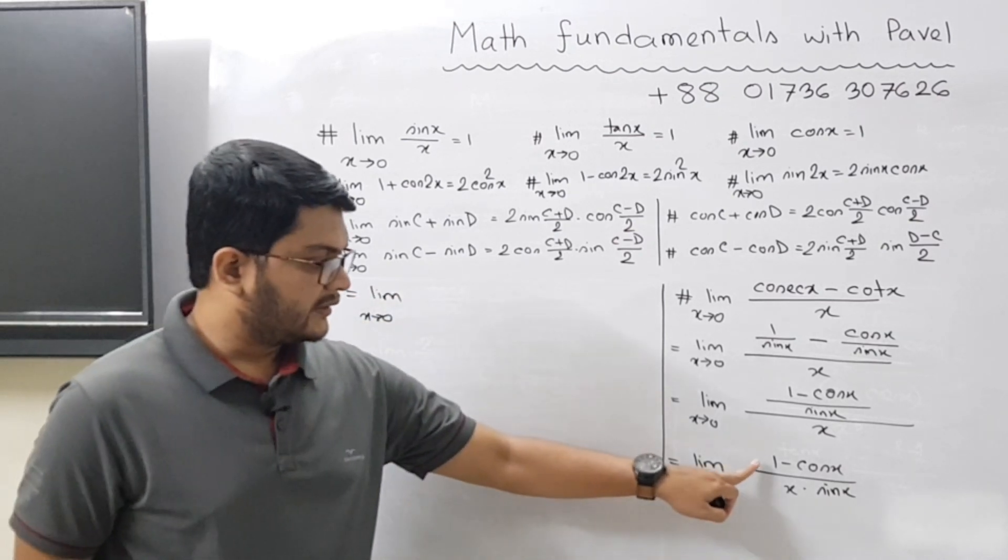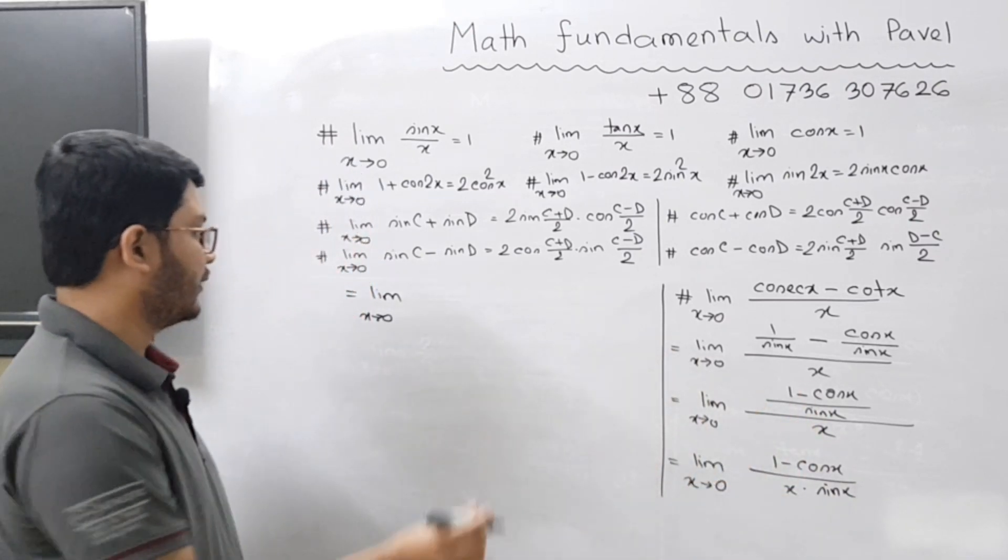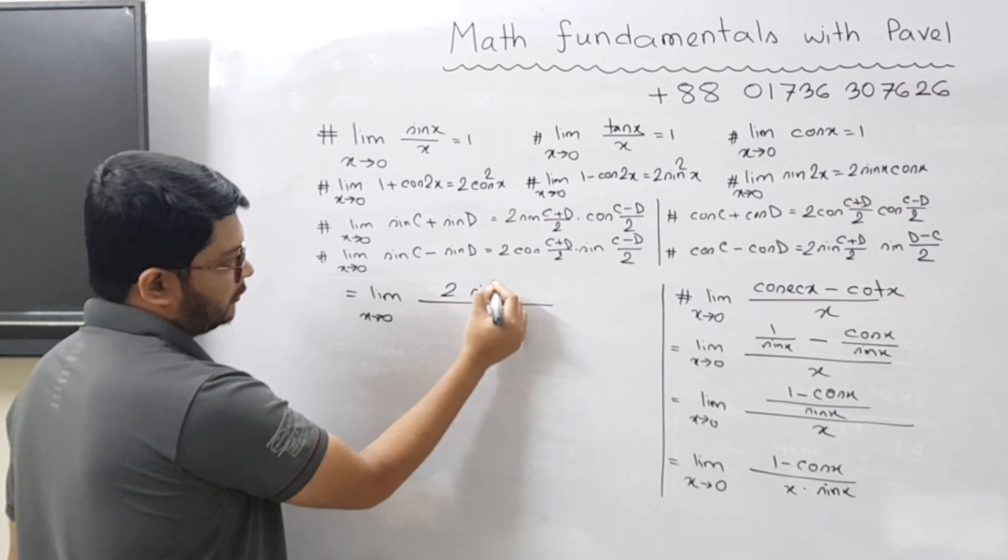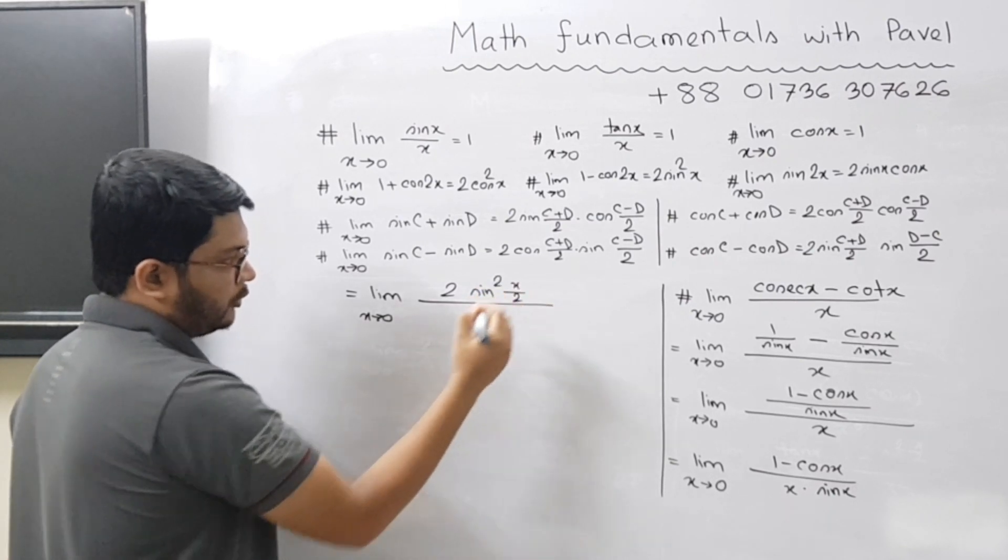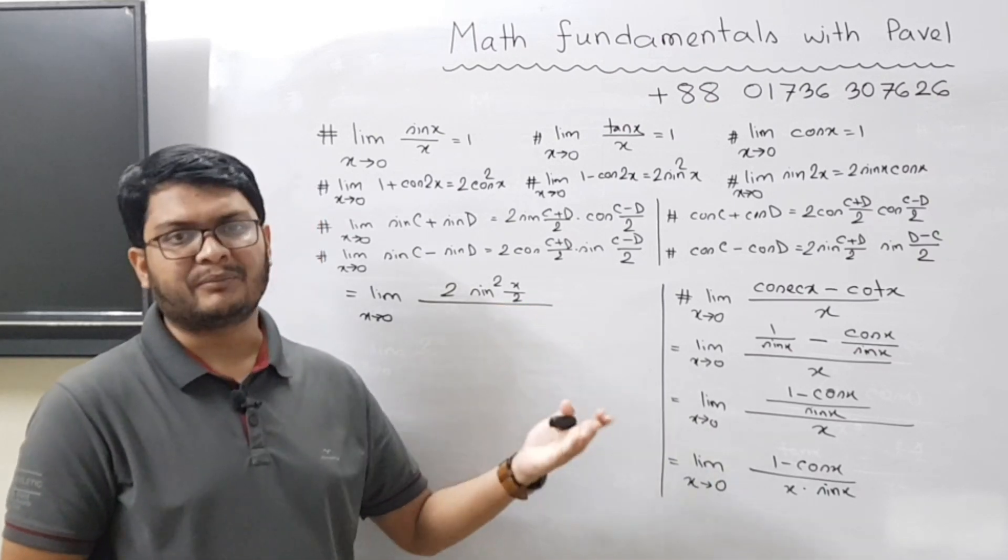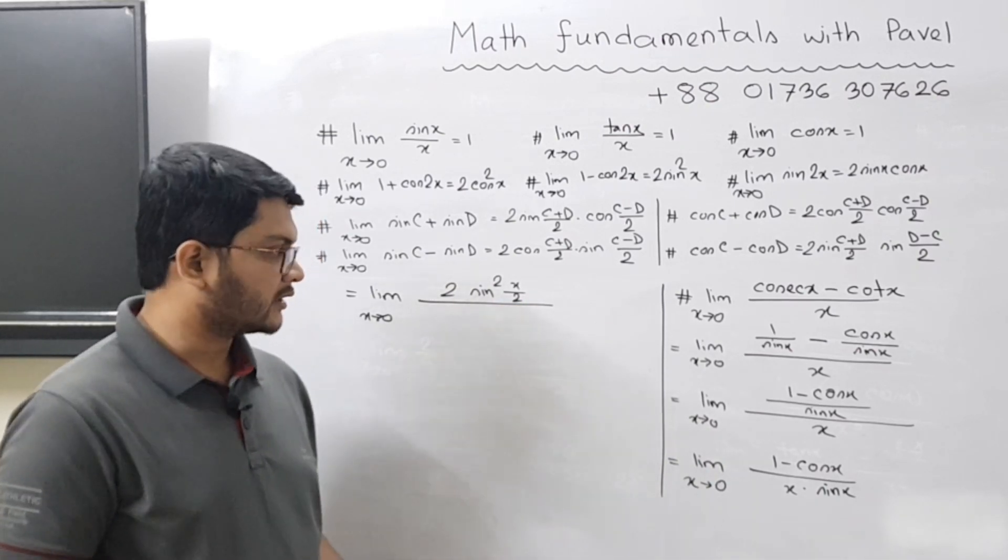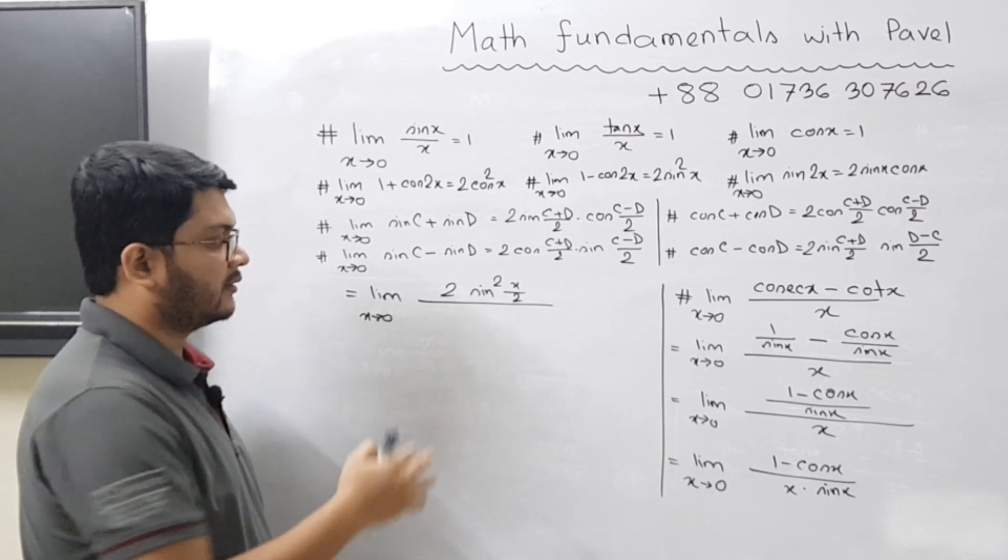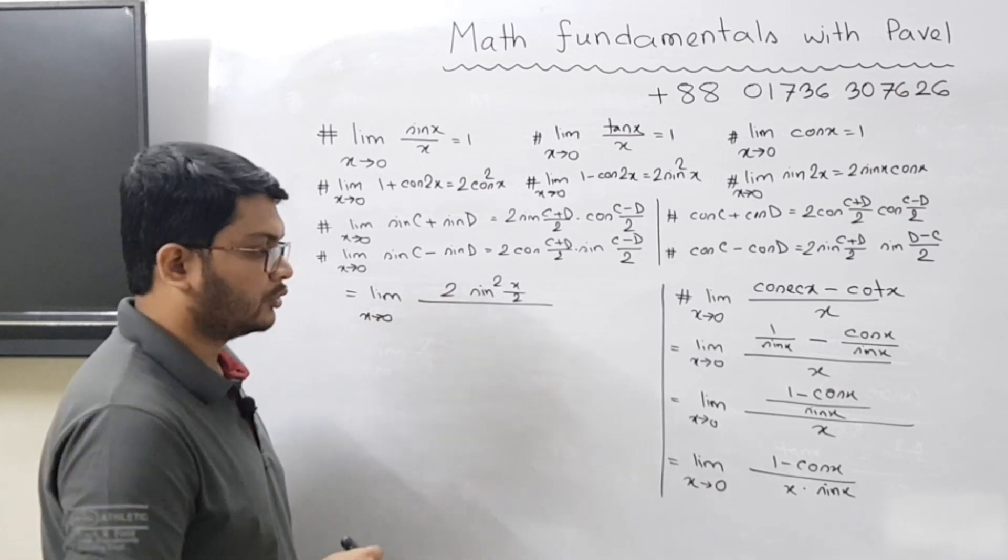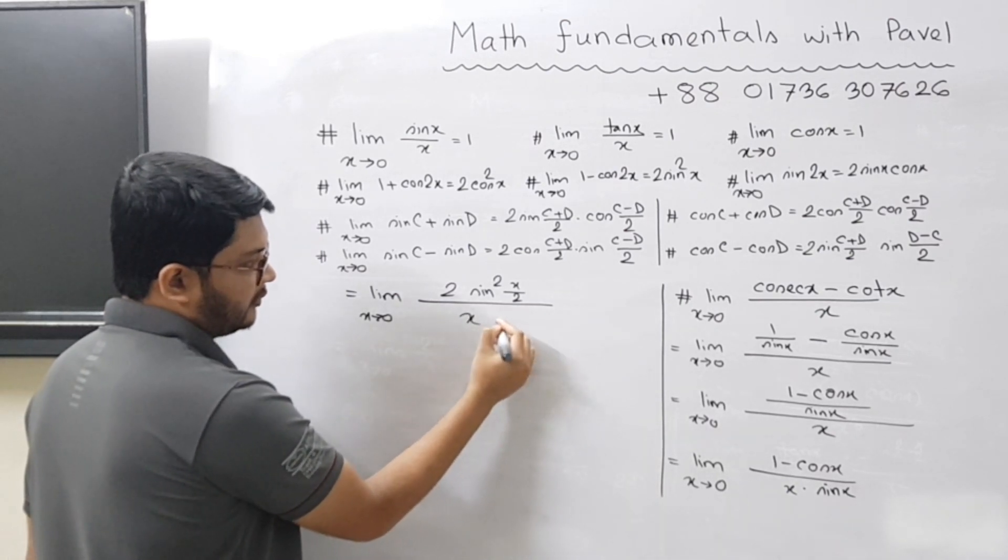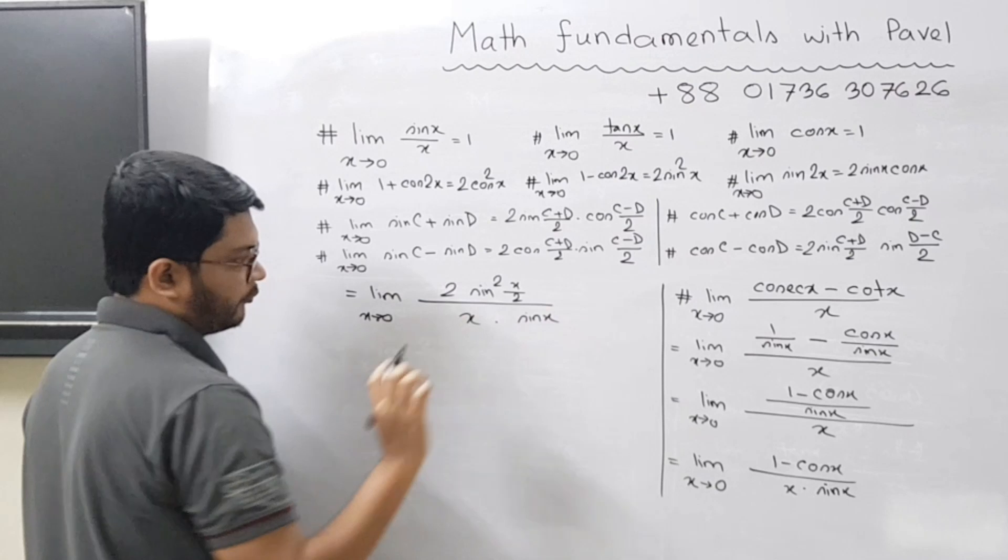Now we will convert this 1 minus cos x, so we will get 2 sin square x by 2. I hope you understand this part because we already discussed the same topic a number of times in the previous few lectures. So if you face trouble understanding this concept, then just go back to those videos. And you will get x times sin x.